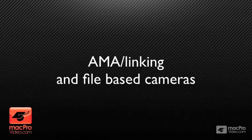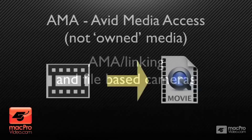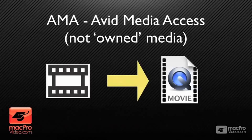Instead of shooting to videotape, they're shooting to a digital file on a chip or a card. These file-based cameras have become tremendously popular over the last five years. And instead of capturing and owning the media, if we could just link to it, we could go a lot faster — link to the file and it would be instantly available online. That's exactly what AMA does: it doesn't own the media, it just immediately links from the clip to the physical file out on your system.